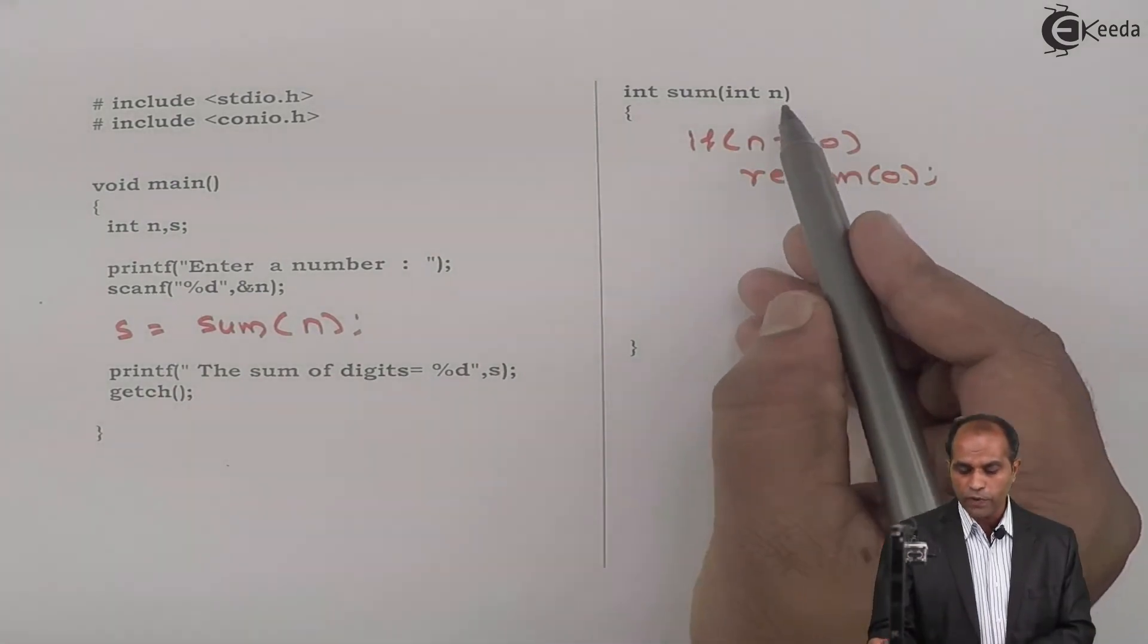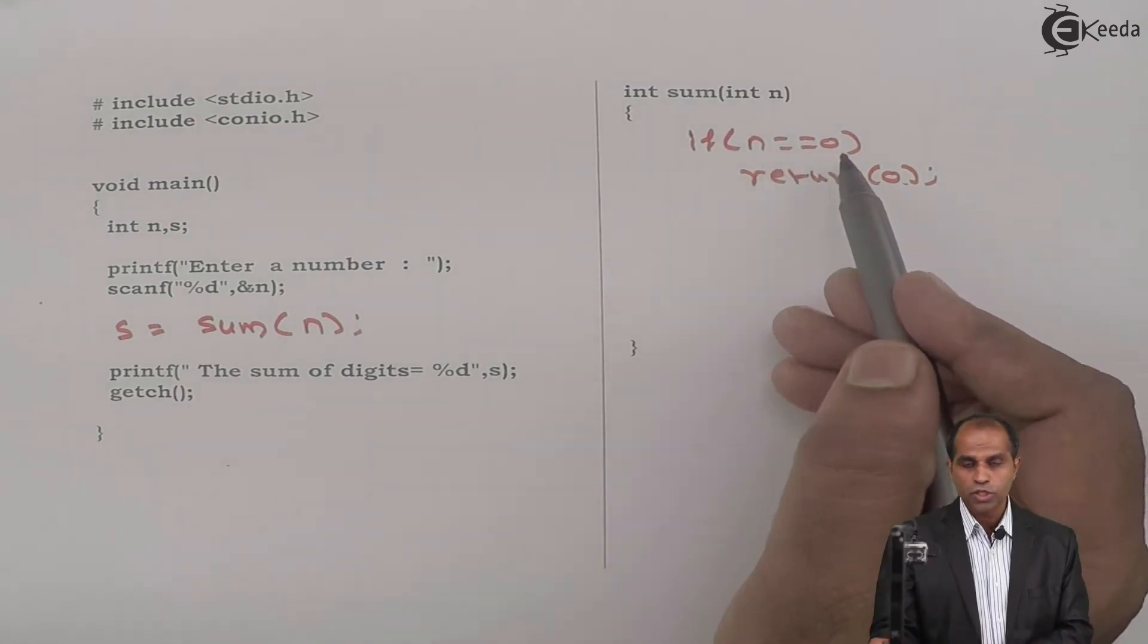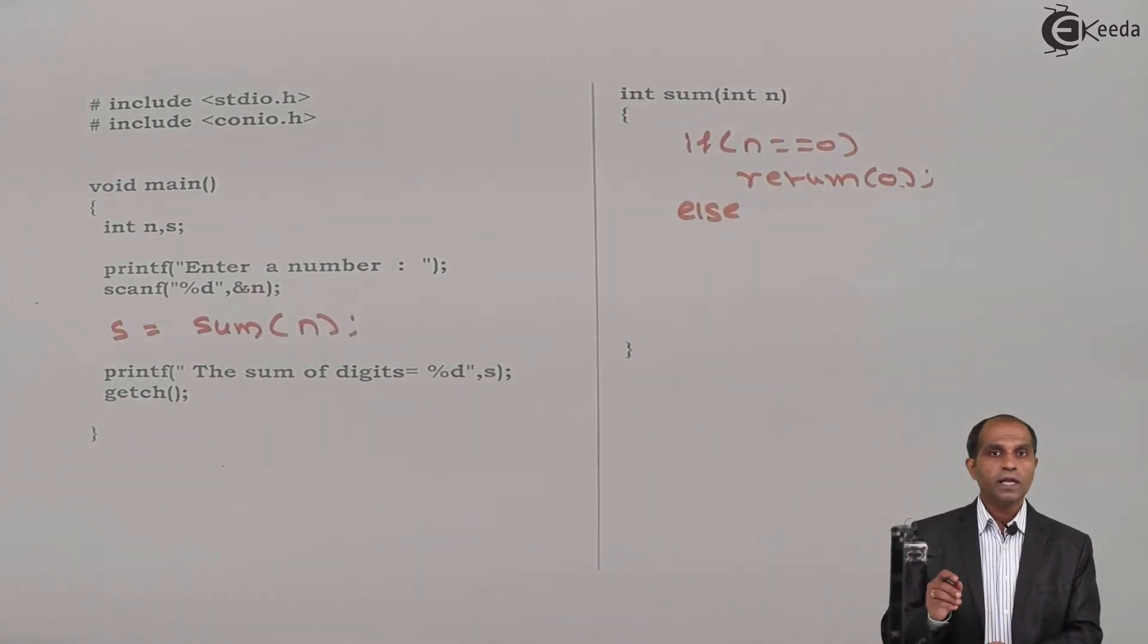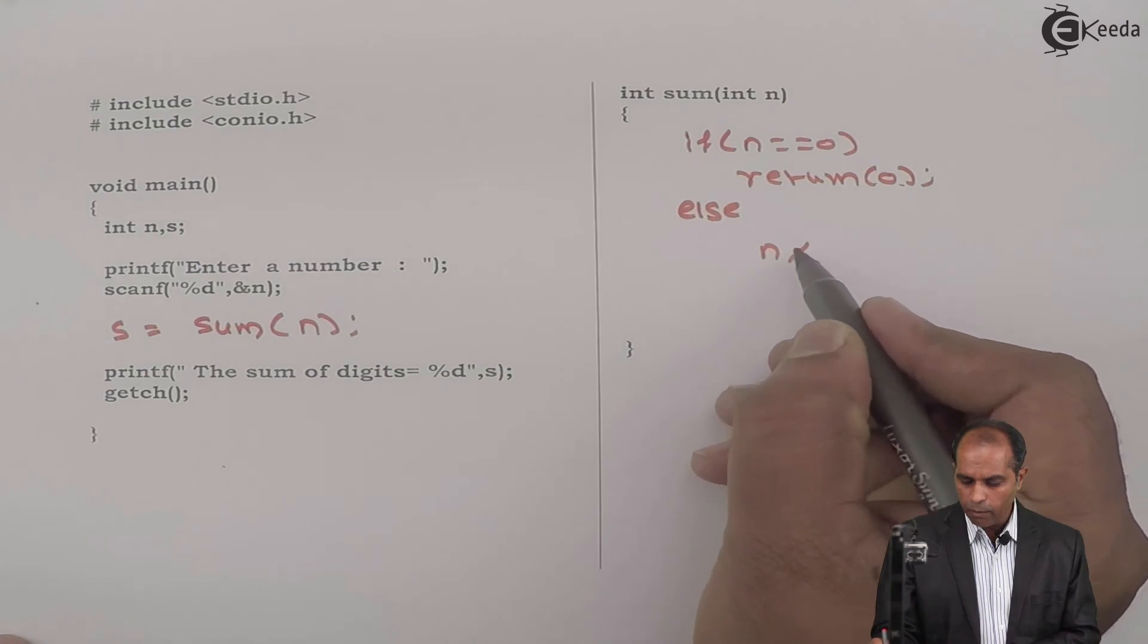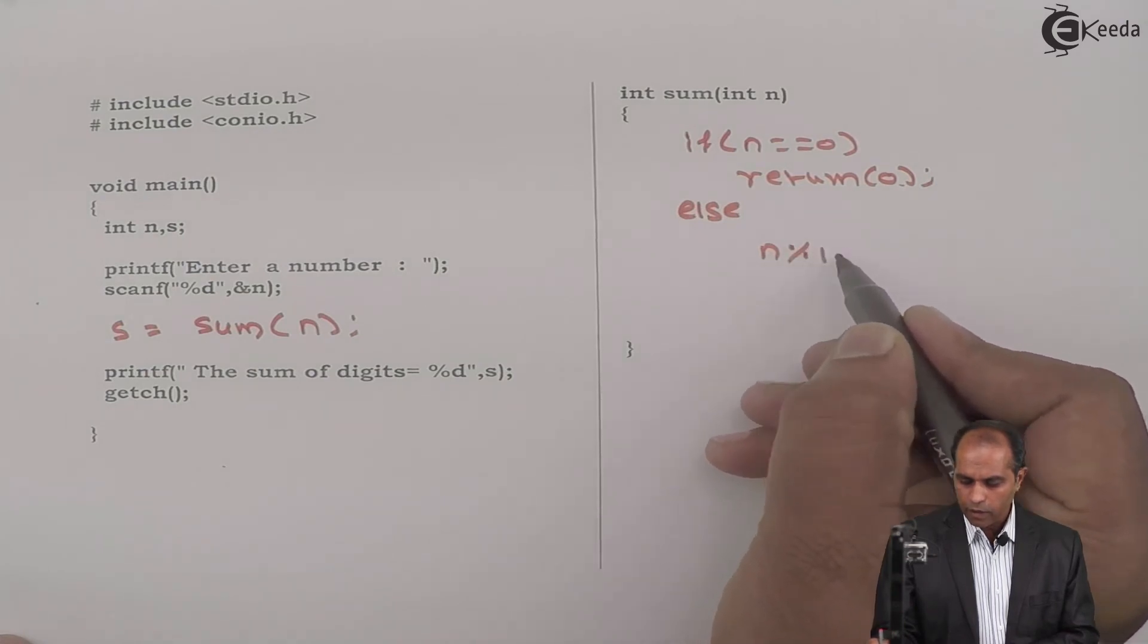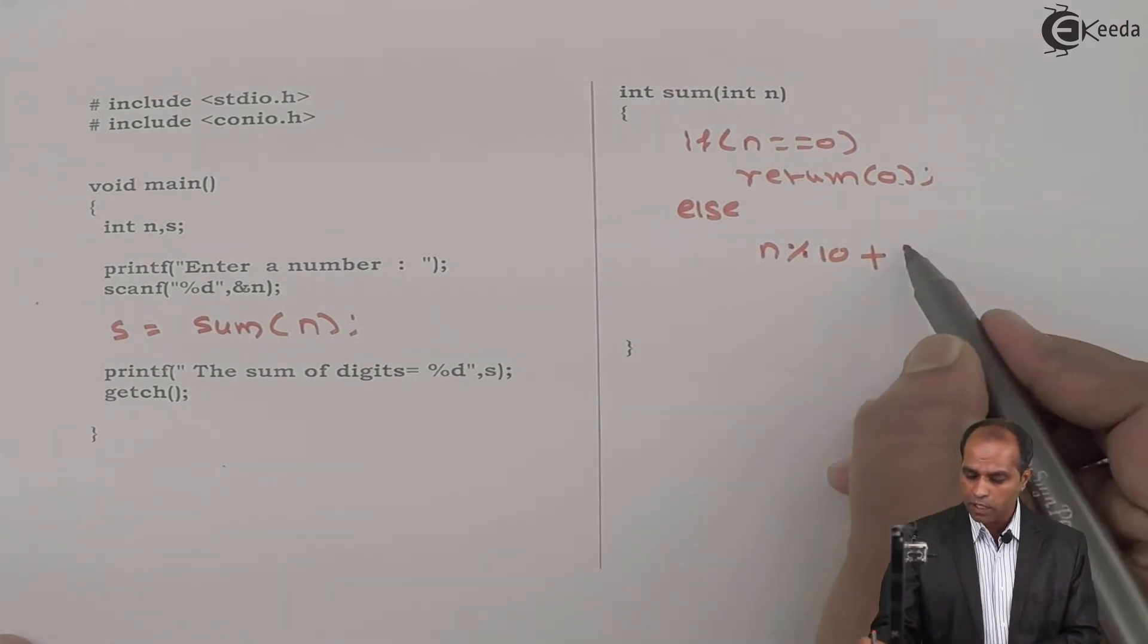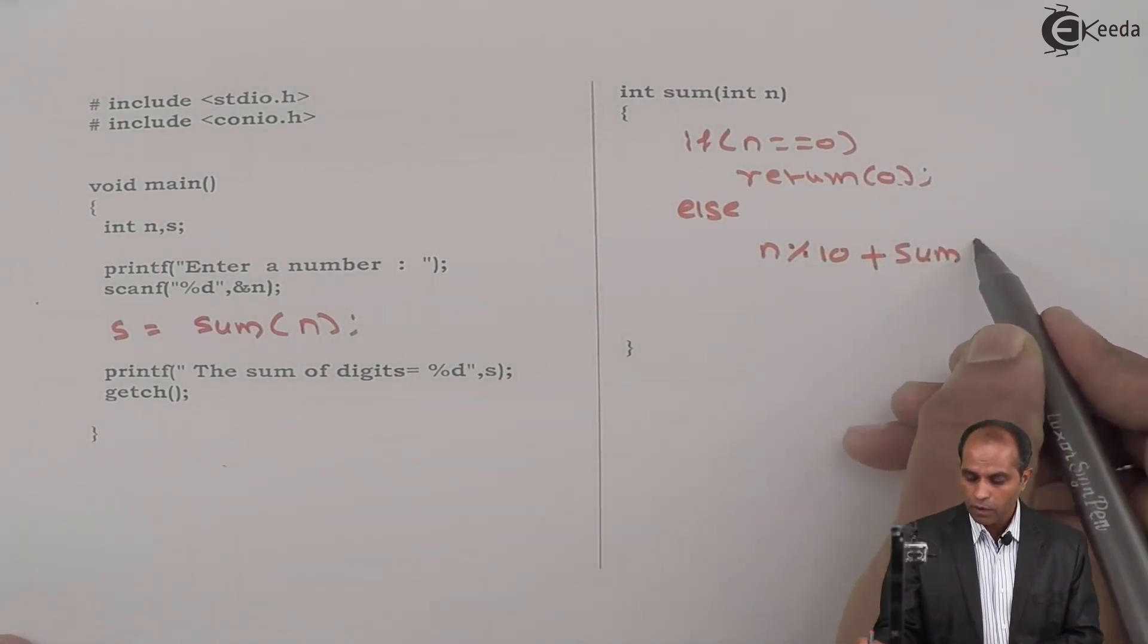But what if the number is 523? 523 equal to 0? No. No in the sense then it goes into else part. What do you do? You kept the last digit of the number. How do you get the last digit number? We said n mod 10 plus you called one more time the sum function by passing what?